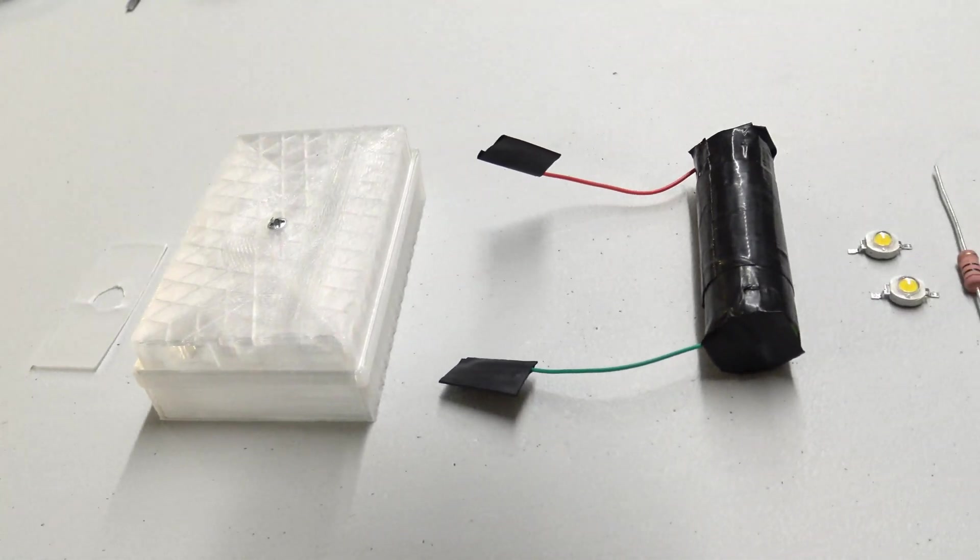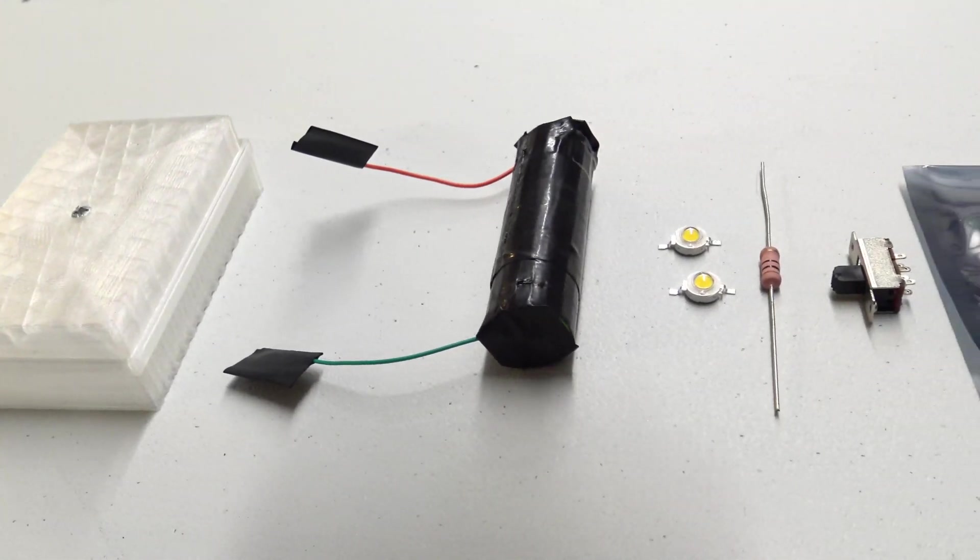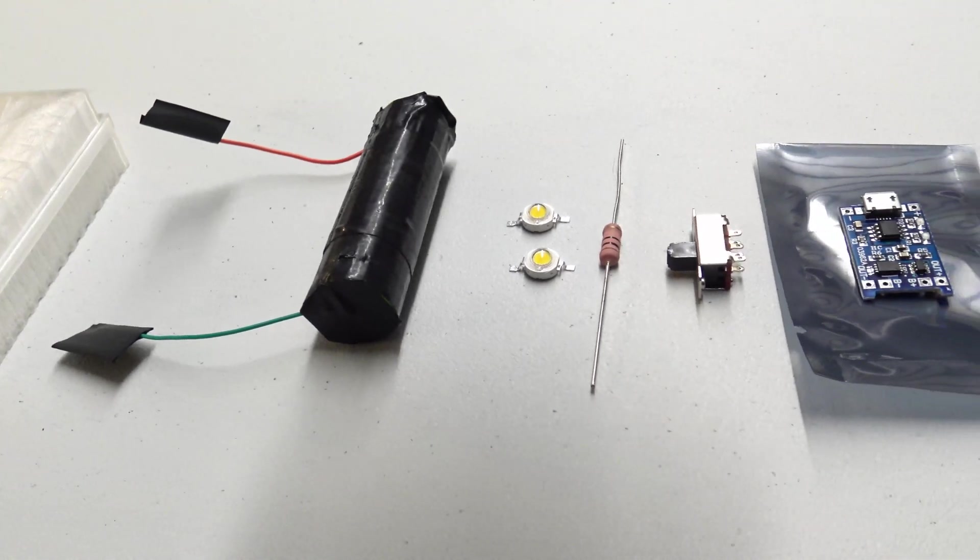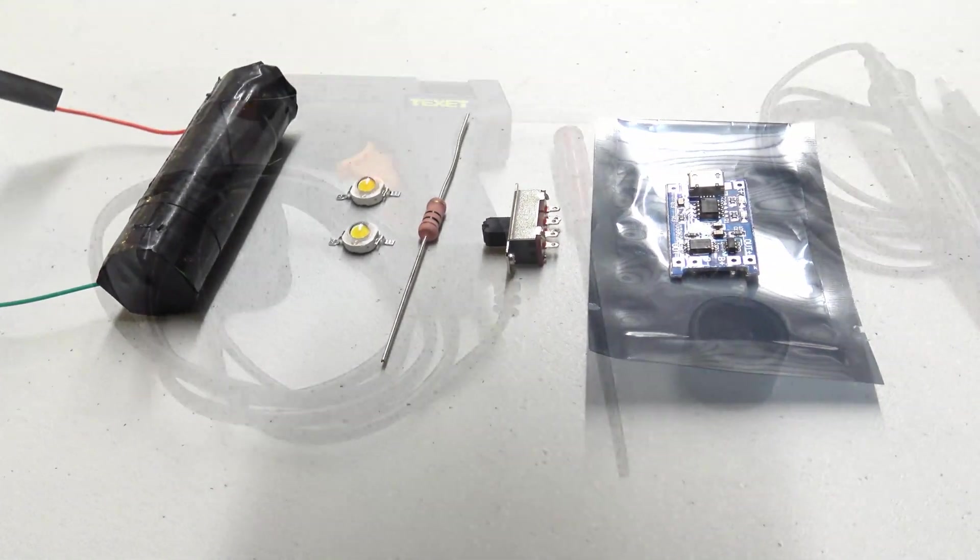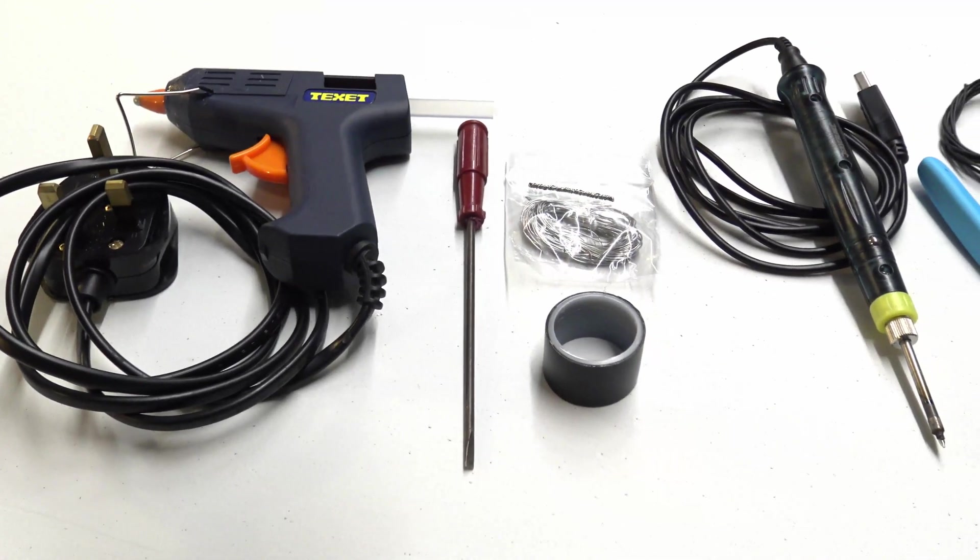So the parts included in the kit are obviously the 3D printed case, a lithium-ion rechargeable battery, two LEDs, one watt each, a resistor, a switch and a charge PCB.